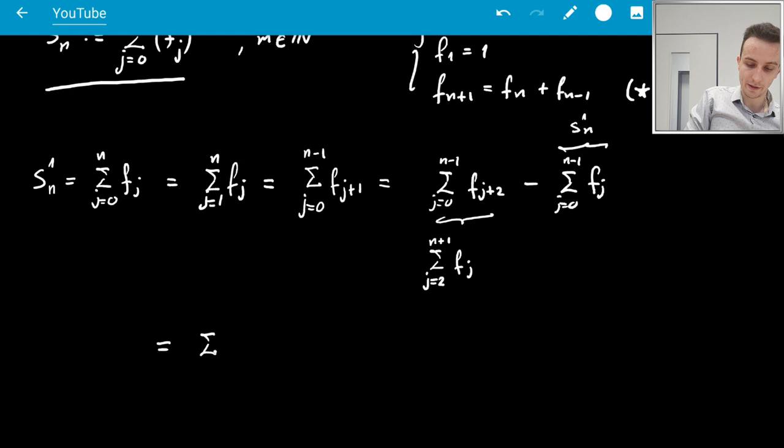And plus 1 F_j, and then I need to subtract F_0 and F_1. F_0 is 0, though. And then here, I'll write this as S_1n. Now, this is not S_1n, it's n minus 1.